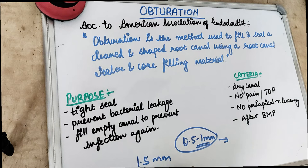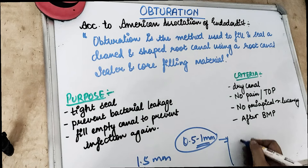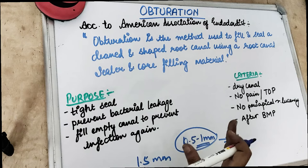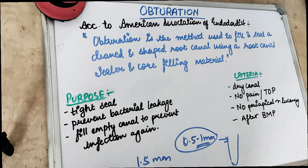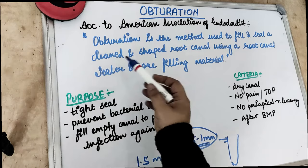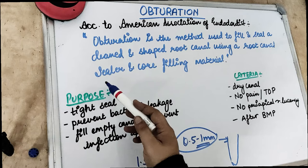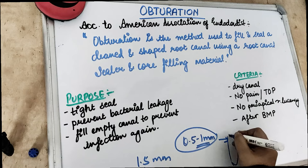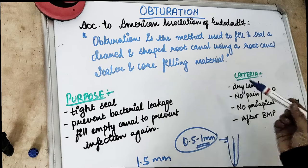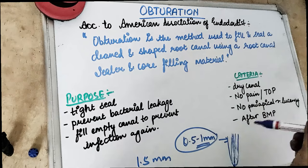Basically we are obturating the root canal — the canal which we have emptied, which is free and empty, free of bacteria, dry. We have to fill it with some material that is non-toxic, does not give any adverse reaction or pain to the patient, and provides a seal that prevents infection and bacterial invasion. According to the American Association of Endodontists, obturation is the method used to fill and seal a cleaned and shaped root. We use a root canal sealer — we dip the material in the sealer and fill the root canal, essentially filling almost all of the root canal space.